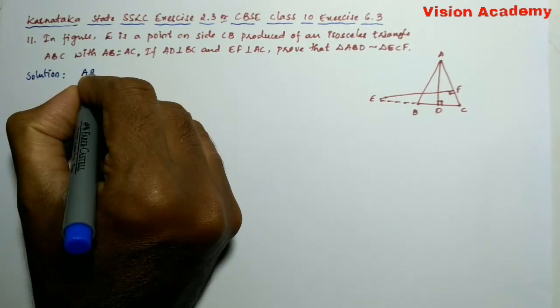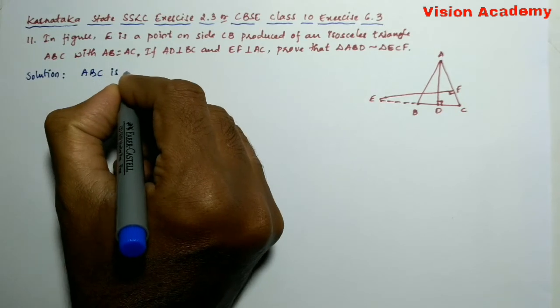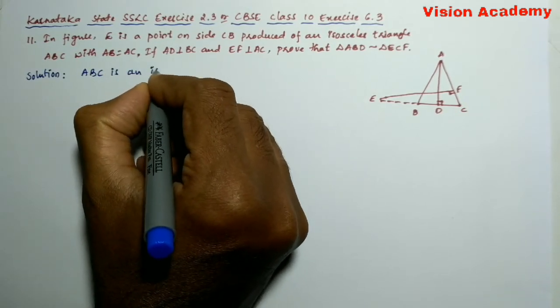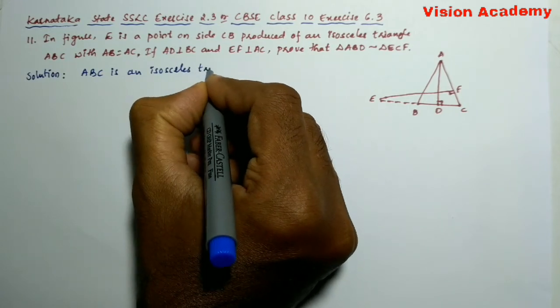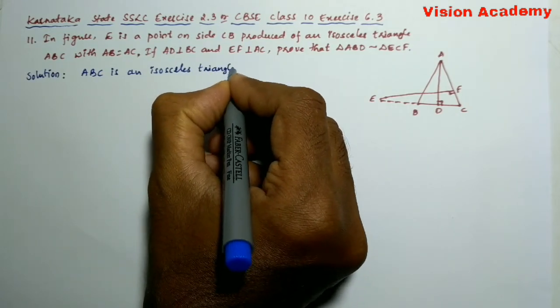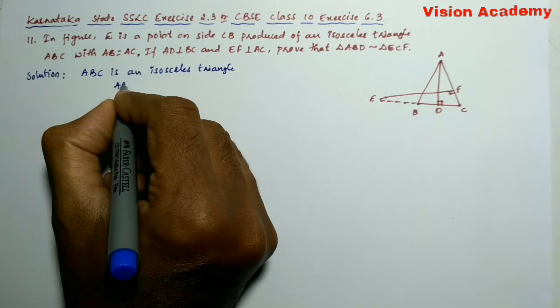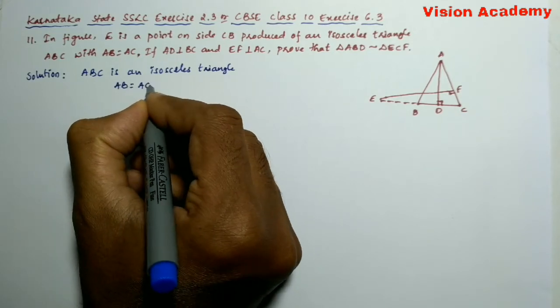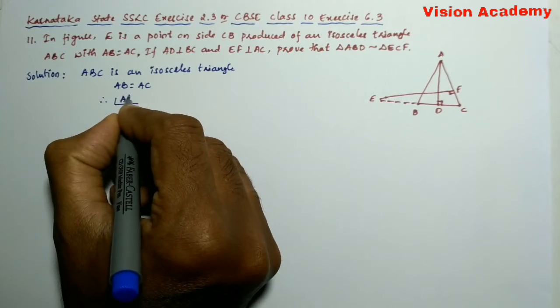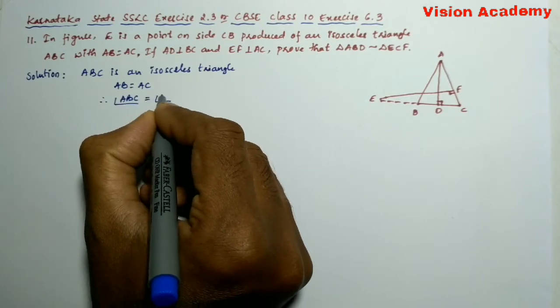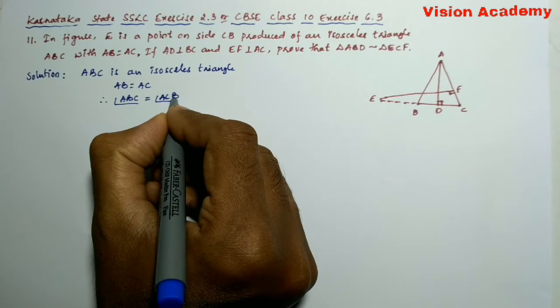Here, ABC is an isosceles triangle. Therefore, AB is equal to AC. Therefore, angle ABC is equal to angle ACB.